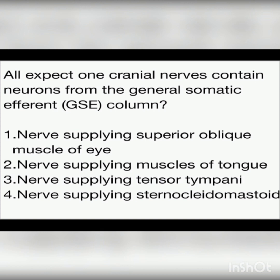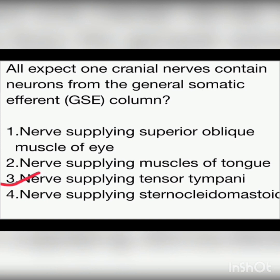The third option is the nerve supplying tensor tympani. Tensor tympani is a muscle of the first pharyngeal arch, so it will be special to us — this is the answer, the odd one out. The fourth option is the nerve supplying sternocleidomastoid, supplied by the spinal accessory nerve. We can move our head according to our will, so it is a voluntary muscle — general somatic efferent. Therefore, the answer is the nerve supplying tensor tympani, as it is a first branchial arch derivative, making it special visceral efferent, not general somatic efferent.